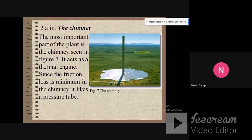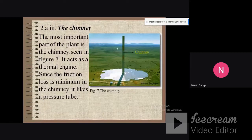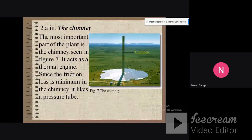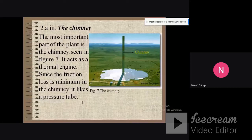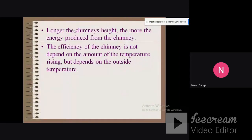The most important part of the plant is the chimney seen in the figure. It acts as a thermal engine. Since the friction loss is minimum in the chimney, it is like a pressure tube. The longer the chimney's height, the more energy produced from the chimney. The efficiency of the chimney does not depend on the amount of temperature rising, but depends on the outside temperature.